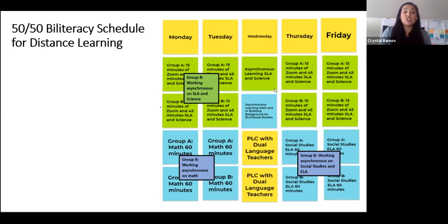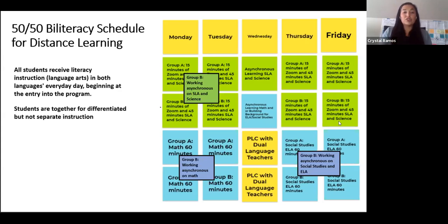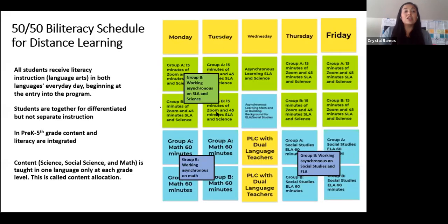What does this schedule clearly tell us? All students receive literacy instruction in both languages every day at the beginning entry to the program — this reflects our biliteracy guidelines. The schedule reflects that students are together for differentiated but not separate instruction, with whole group followed by smaller intervention groups. In Pre-K through 5, content and literacy are integrated, and content — whether science, social studies, or math — is taught in one language only at each grade level, which is where language and content allocation comes into play.